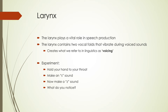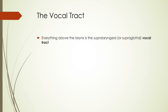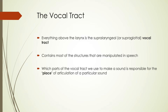Most of the distinctions we make in our sounds, both consonants and vowels, happen in our vocal tract. Everything above the larynx is sometimes called the supralaryngeal or supraglottal system — you'll usually just hear me say vocal tract or oral tract. This contains most of what we actually manipulate in speech, and the parts of the vocal tract used to make a sound are what we call the place of articulation for a particular sound.